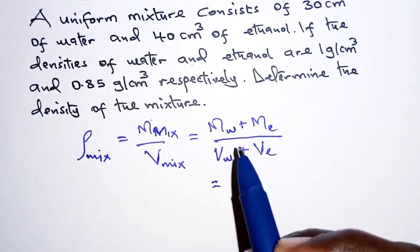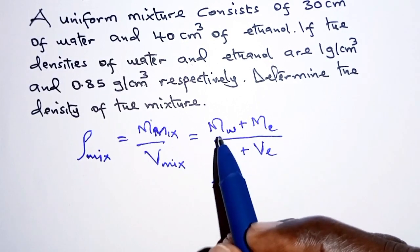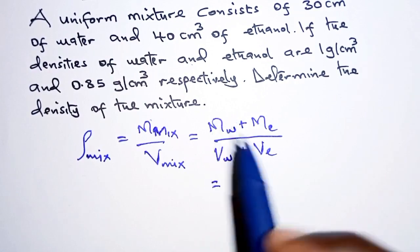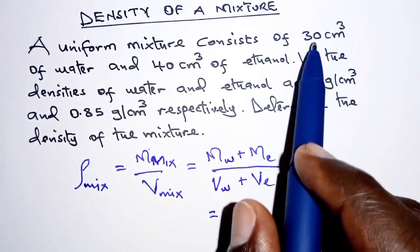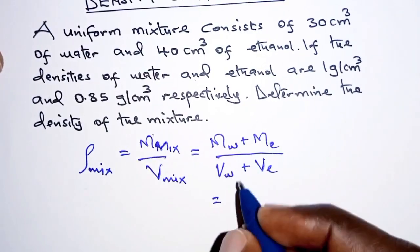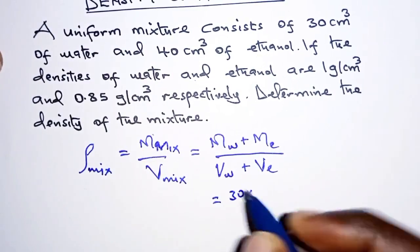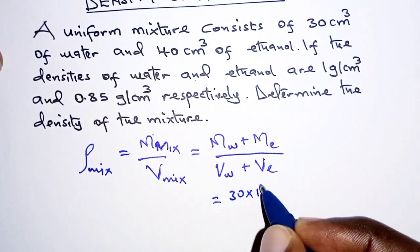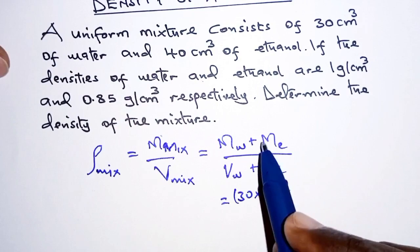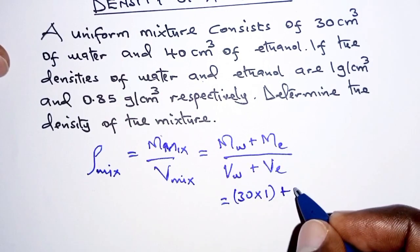You know that mass equals density times volume, so the mass of water here will be the volume of water, which is 30, times the density, which is 1. And then we add that to the mass of ethanol, of which we have the volume of ethanol, which is 40, times the density, which is 0.85.